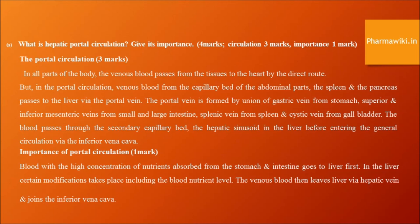Functions of semen. Semen increases motility and fertility of spermatozoa. Semen is slightly alkaline to neutralize the acidity of the vagina. Prostaglandins present in semen cause contraction of the uterus. Semen contains nutrients to nourish and support the sperm during their journey through the female reproductive tract.